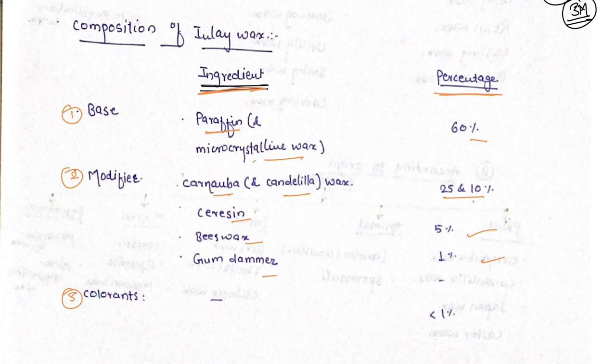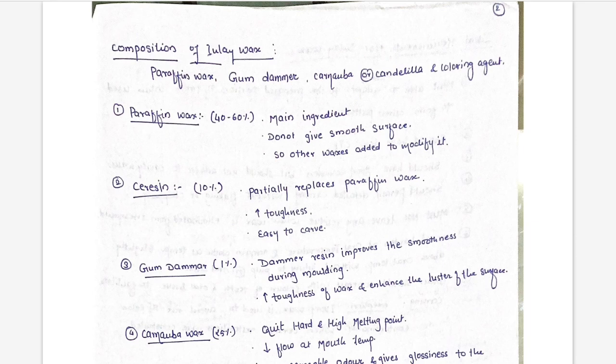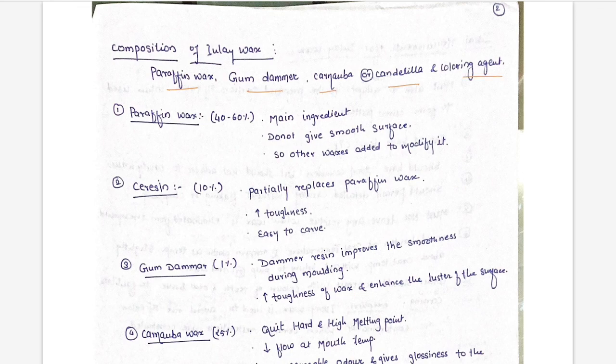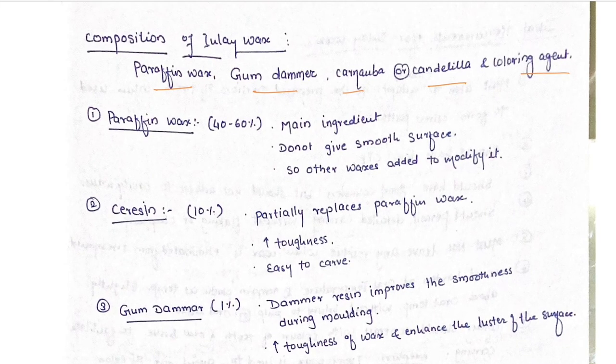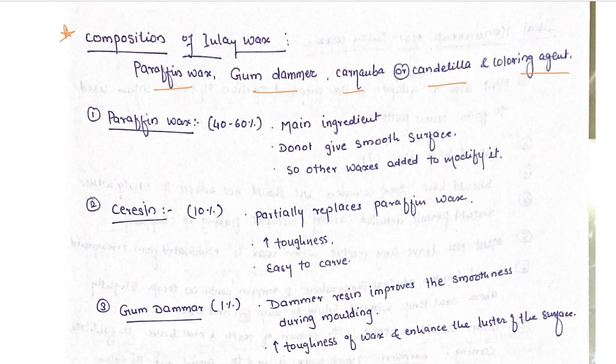This composition question appears either as a short answer question or as part of a long answer question. The composition of inlay wax includes paraffin wax, gum dammer, carnauba or candelilla, and coloring agent. This is frequently asked.